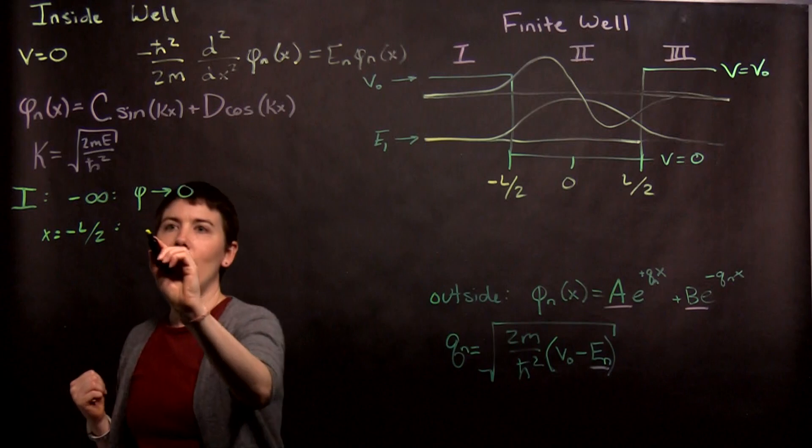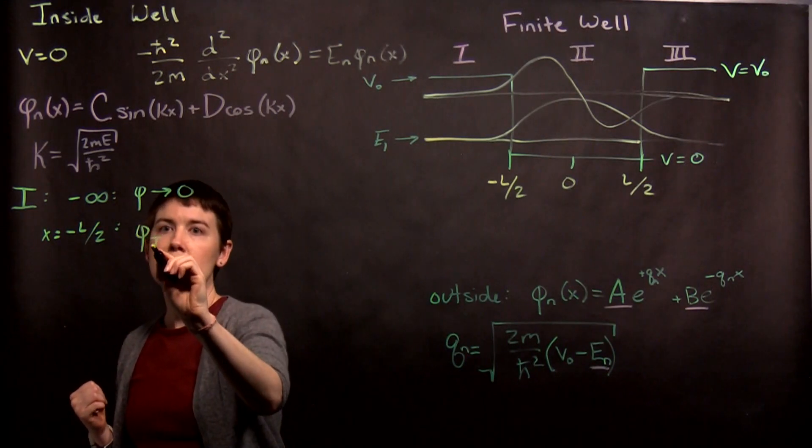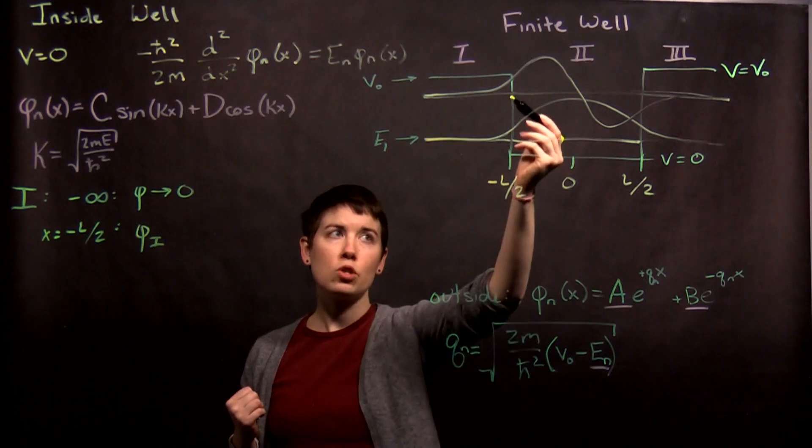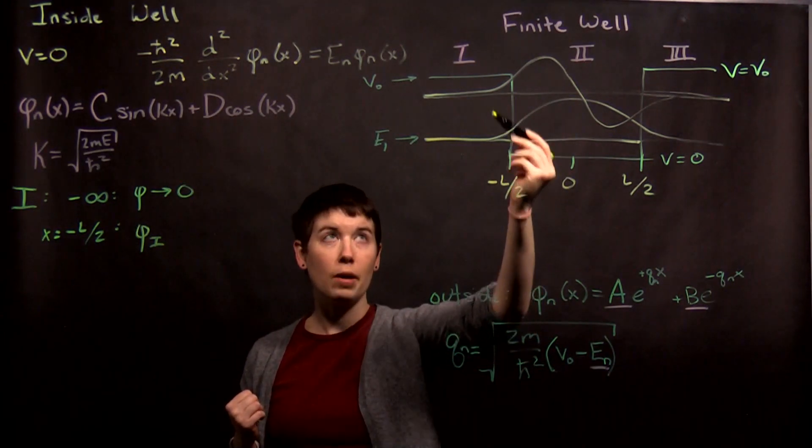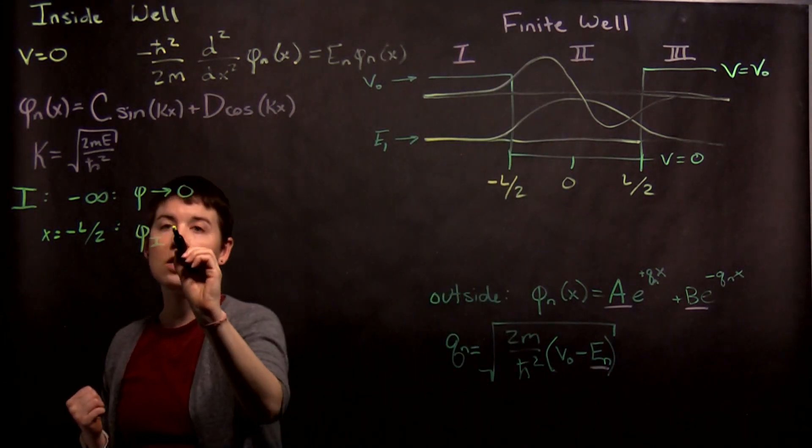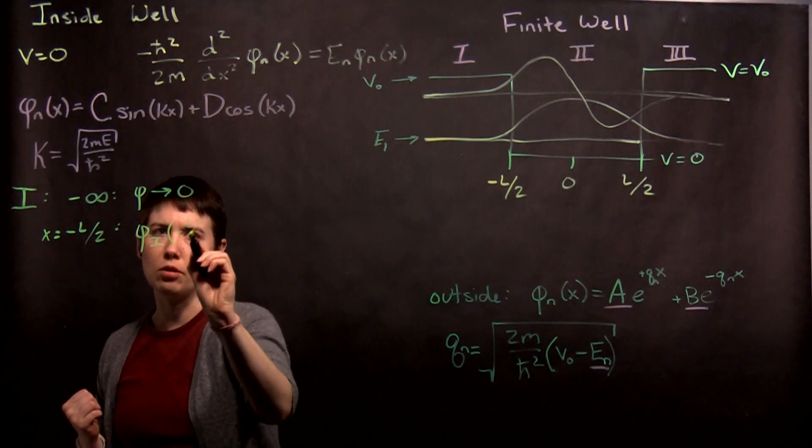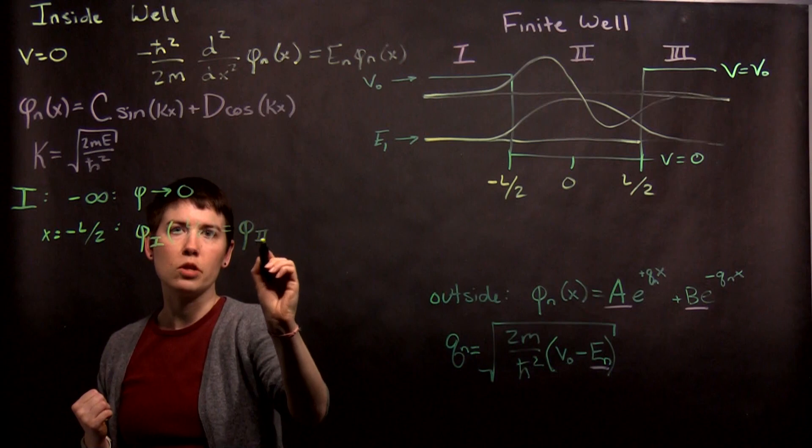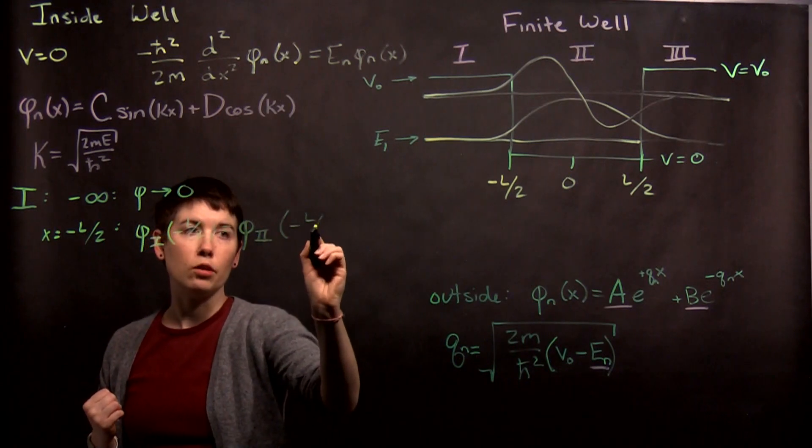So at negative l over 2, we need to basically have phi 1, meaning the wave function as it's approaching negative l over 2 in region 1, to equal, so I can write this as kind of l over 2, has to equal my wave function in region 2 at negative l over 2.